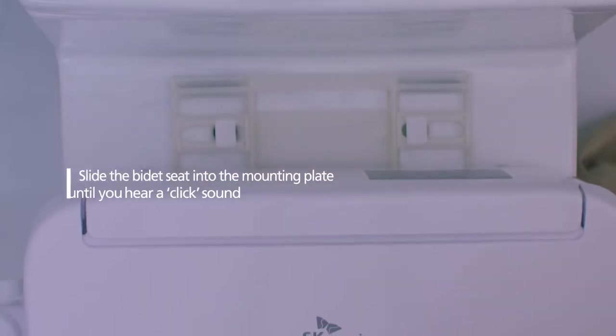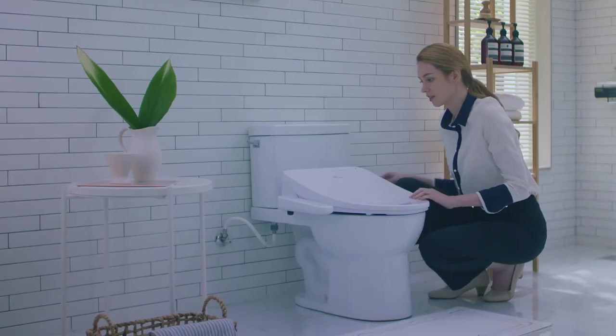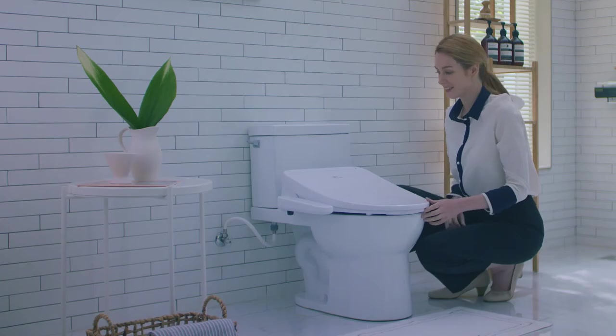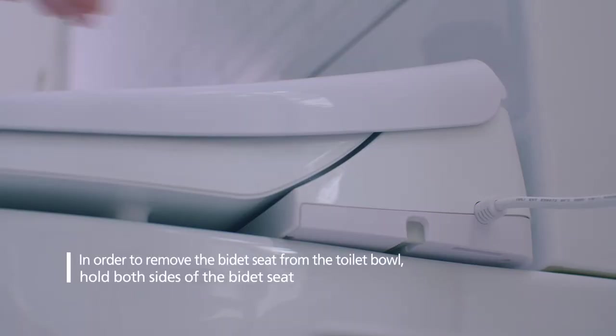Slide the bidet seat into the mounting plate until you hear a click. Please check if the bidet seat wiggles from side to side, and if the bidet seat wiggles, then tighten the mounting nuts under the toilet one more time.